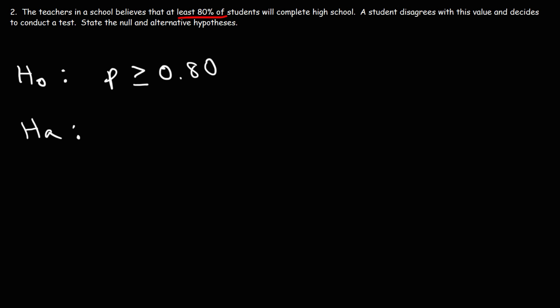At least 80% means it could be 80% or more. So the proportion is going to be equal to or greater than 0.80, which is the decimal equivalent of 80%. The student disagrees — they believe it's less than 80%. So for the alternative hypothesis, P is going to be less than 0.80. It doesn't require too much to state the null and alternative hypotheses.